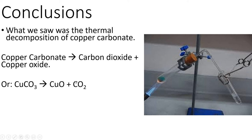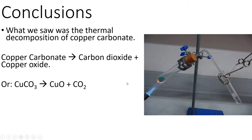For those of you who feel confident with symbol equations, this is what it looks like: CuCO3 goes to CO2 and CuO. Take a second to double-check that is balanced — are there the same number of each element on either side? There's one copper on each side, three oxygens on each side, and one carbon on each side. So yes, that is a balanced equation. Carbon dioxide is a gas which was lost to the air, and this is why the mass has decreased.